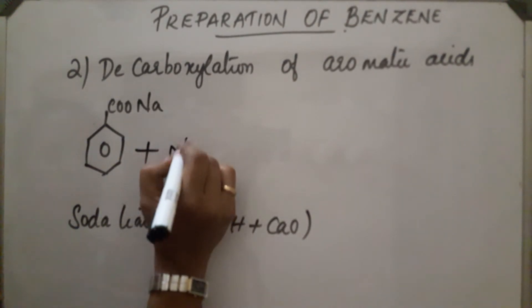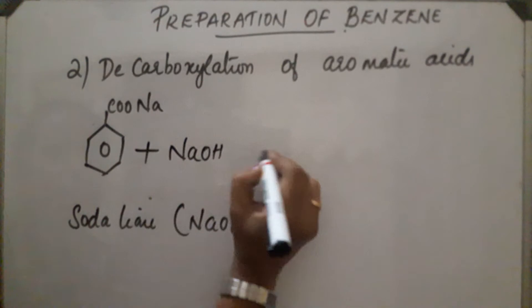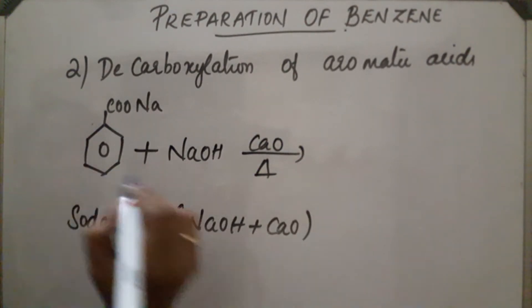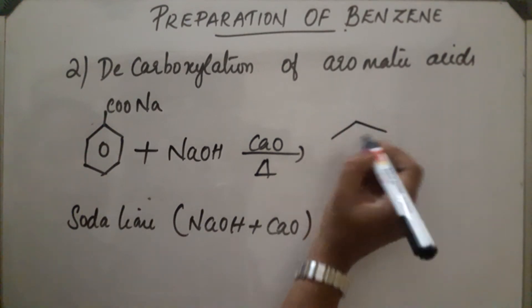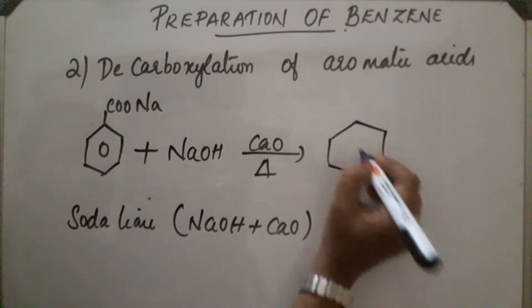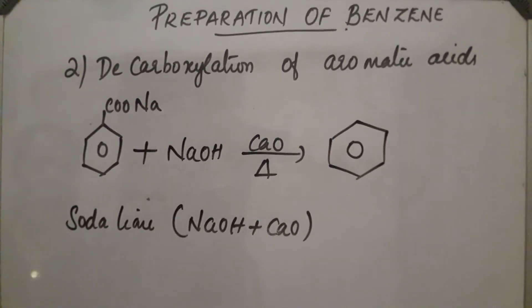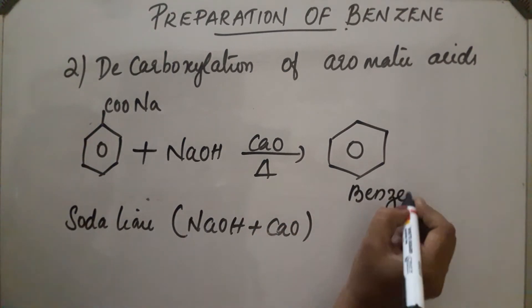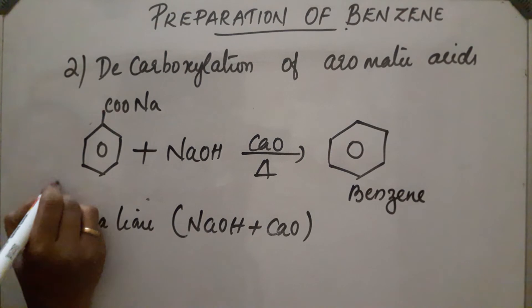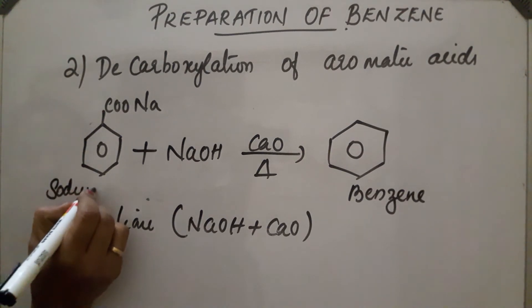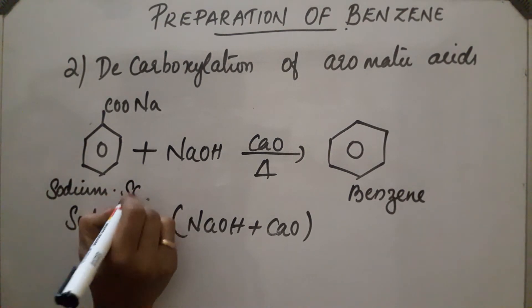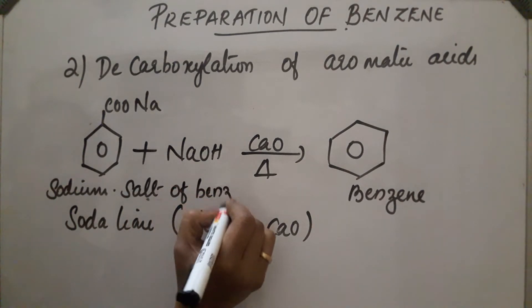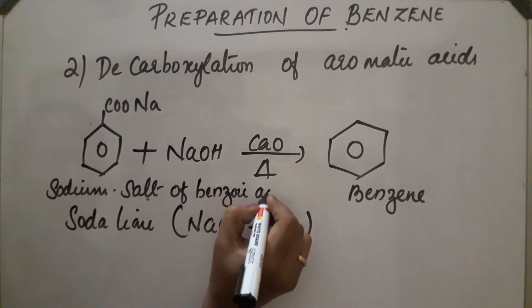The sodium salt of benzoic acid undergoes decarboxylation and gets converted into benzene. This is the second method of preparation.